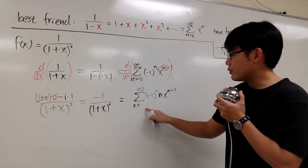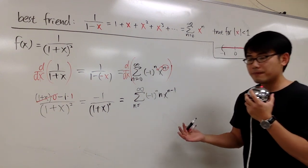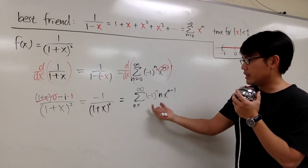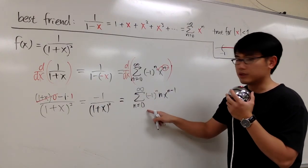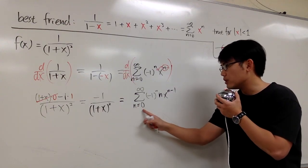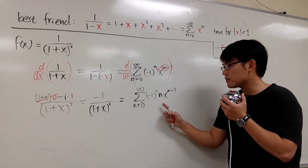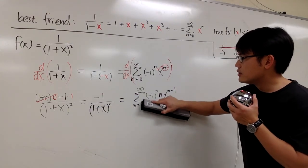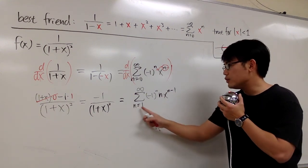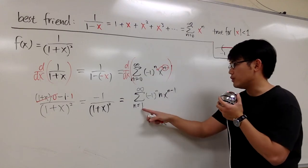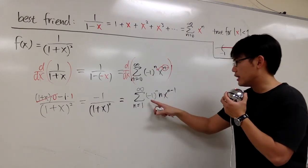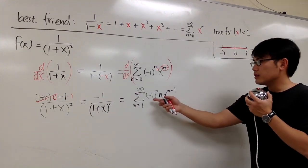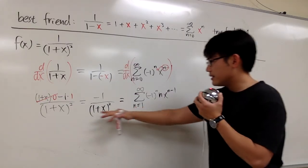What should the starting value for n be? Whenever we differentiate a power series, we lose one term. You can start with n equal to 0, but when you plug in n equals 0, you produce 0 because of the n factor. To avoid redundancy, we start with n equal to 1 instead. When n equals 1, we produce our first non-zero term — negative 1 to the 1st power times 1 times x to the 0, giving negative 1 as the first term.